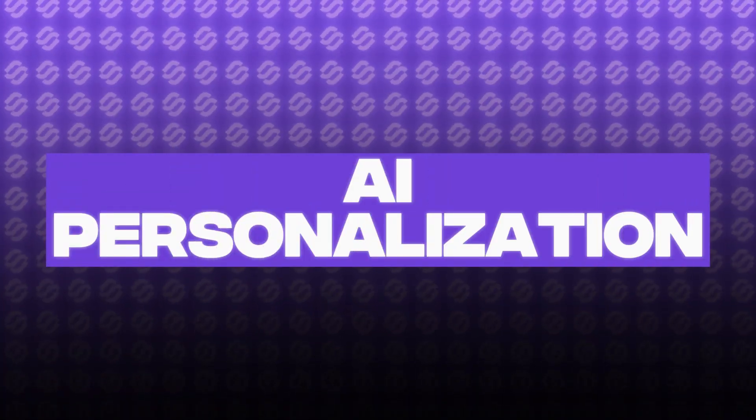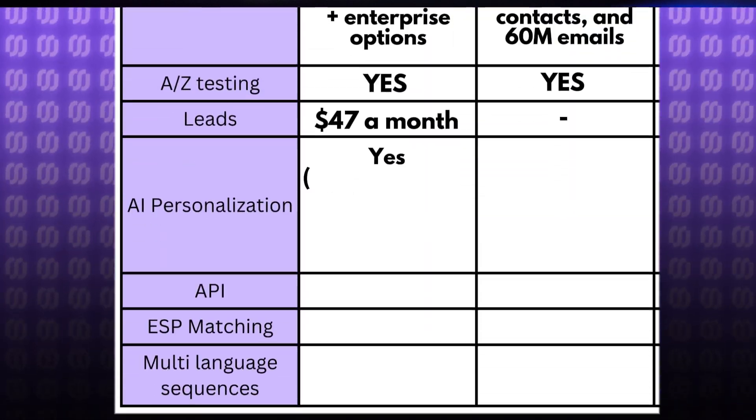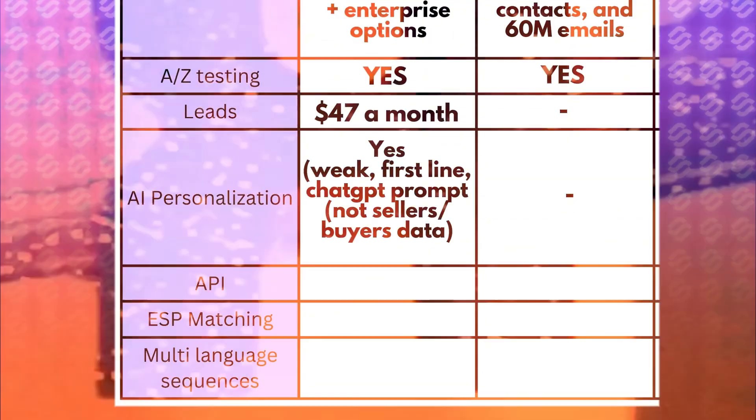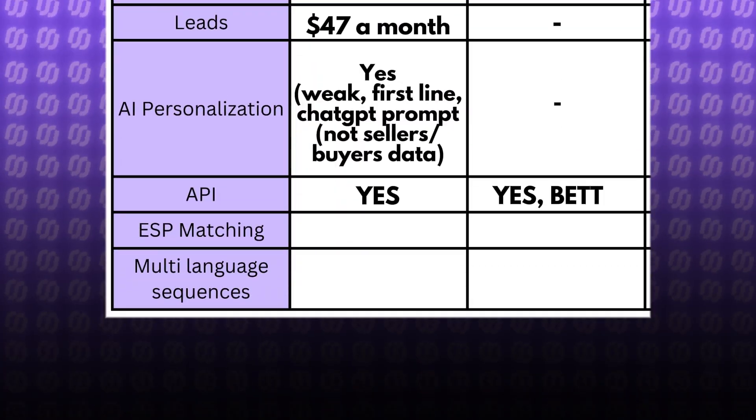Another thing that Instantly offers that Smartlead doesn't is AI personalization. While it's nothing spectacular, you can use Instantly together with OpenAI's ChatGPT API to personalize the first lines of your cold email, write compliments, or do other things. But since it's not really advanced, you could simply do the same within ChatGPT itself, add personalized sentences into your spreadsheet, and use it as a custom variable to get the same result in Smartlead. Smartlead is one step ahead when it comes to APIs — based on the community's opinions, Smartlead's API is miles ahead. So if you have plans of using an API during your cold outreach, it would be a smart choice to go with Smartlead rather than Instantly.